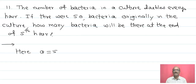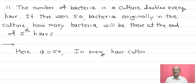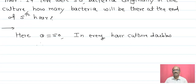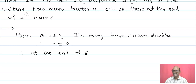The number of bacteria in a culture doubles every hour. If there were 50 bacteria originally in the culture, how many bacteria will be there at the end of the fifth hour? Here, a equals 50. In every hour the culture doubles, therefore r equals 2. At the starting there are 50; in one hour there will be 100; in the next hour there will be 200. That is 100 upon 50 equals 2, and 200 upon 100 equals 2. At the end of the fifth hour,